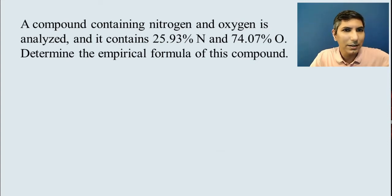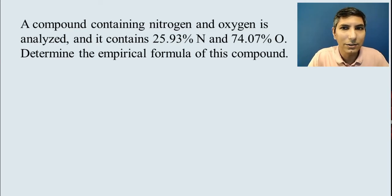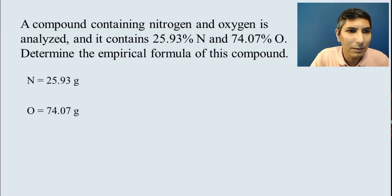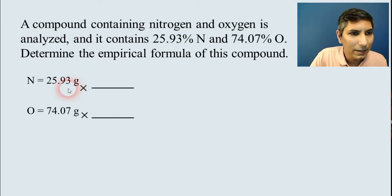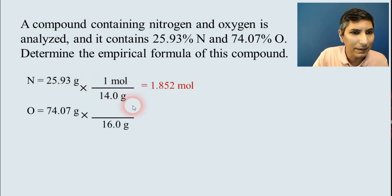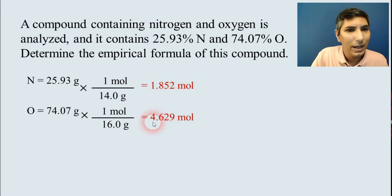Let's try one more example here. We're going to take a compound, this time with nitrogen and oxygen. And it has 25.93% nitrogen and 74.07% oxygen. Let's find the empirical formula. So once again, we have those two gram values. And first thing that you want to do is convert the gram values to moles. So we're going to divide nitrogen by about 14 grams in a mole and oxygen by about 16 grams in a mole. And when we do this, we get about 1.852 moles of nitrogen and about 4.629 moles of oxygen.